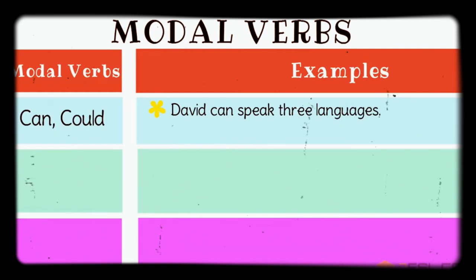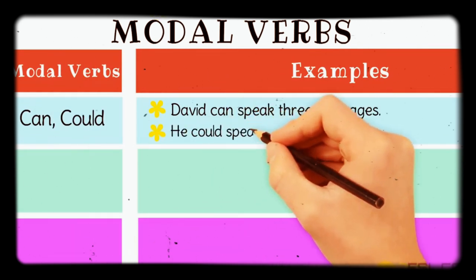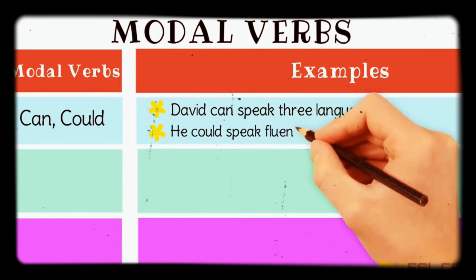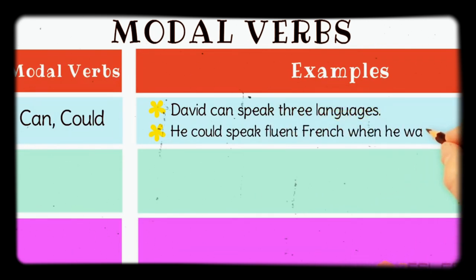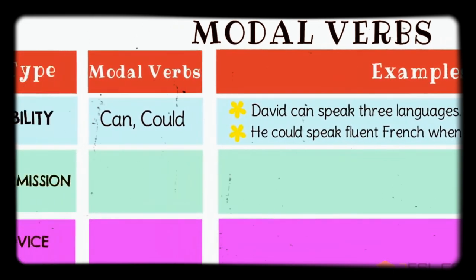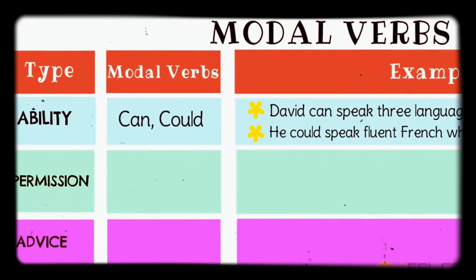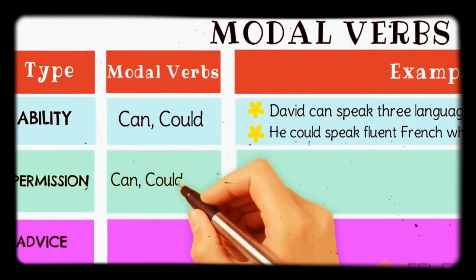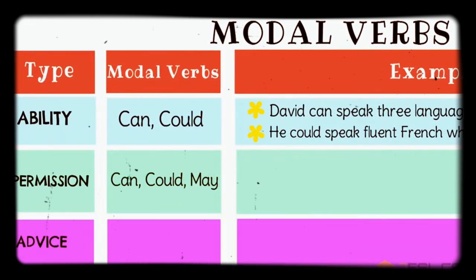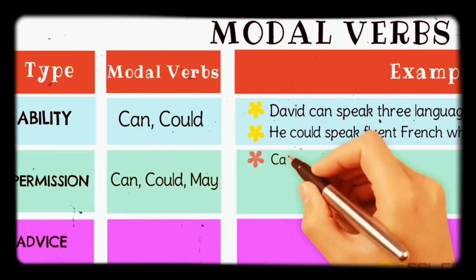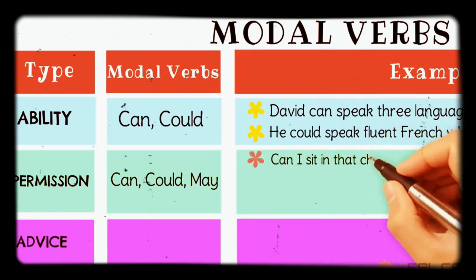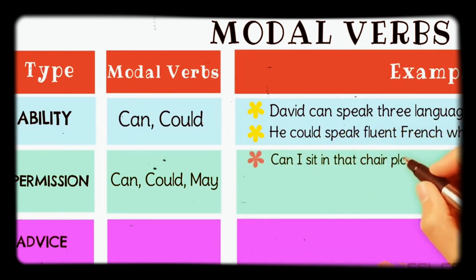In the present tense we use 'can' and in the past we use 'could' for ability. For example: 'David can speak three languages' — this shows ability. 'He could speak French when he was five' — this shows past ability. For permission, we can use 'can', 'could', or 'may'.